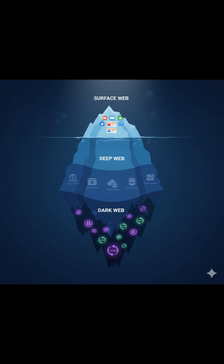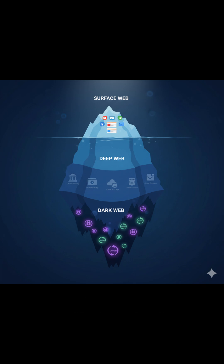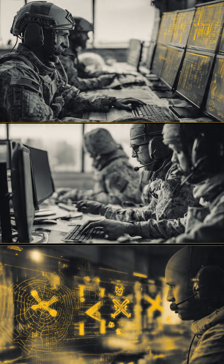Over time, hidden websites known as .onion sites emerged, forming what we now call the dark web — a small part of the deep web that can't be accessed through regular browsers. In essence, the dark web wasn't born for illegal activity; it was created to ensure privacy and freedom of communication in the digital age.